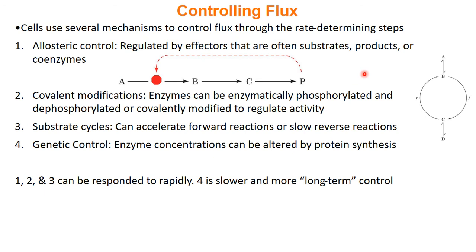To control the flow of metabolites through a metabolic process, the cell has four main things it can do. First, allosteric control: you have an effector — often substrates, products, or coenzymes — that can affect the speed of an enzyme. For example, in a reaction where A goes to B, B goes to C, and C goes to the ultimate product, that product can feed back and inhibit the first step. That's called feedback inhibition, and it's a form of allosteric control.